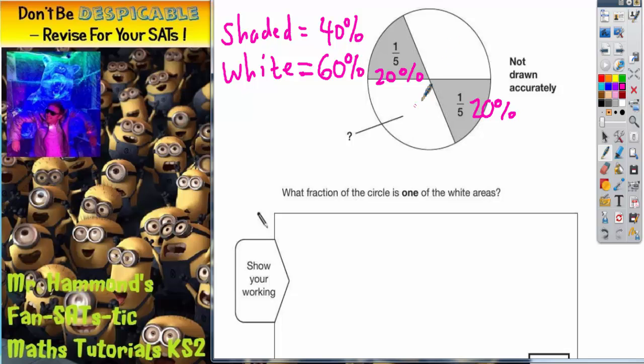So, these two white areas must total 60%, but they are equal. So we need to share 60% between two equal areas to get one of the white areas. 60% divided by 2 is 30%. So each of the white areas must be 30%.